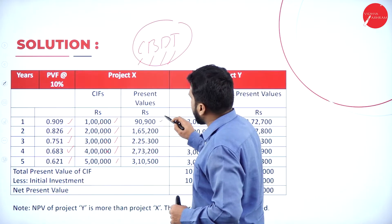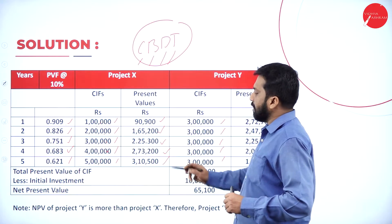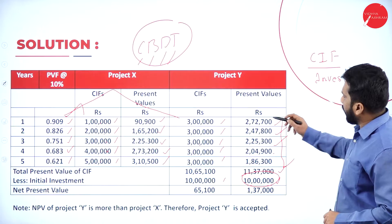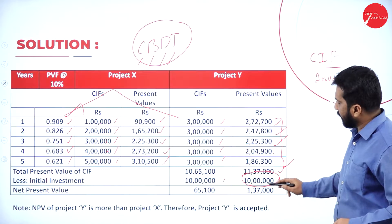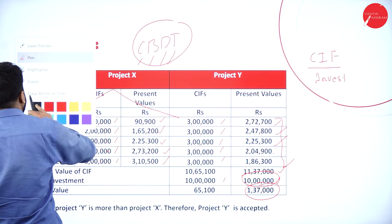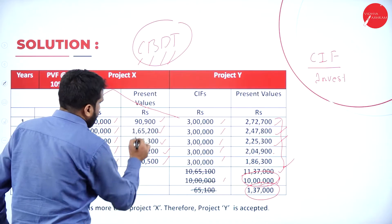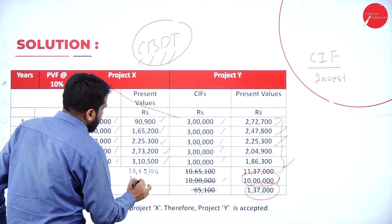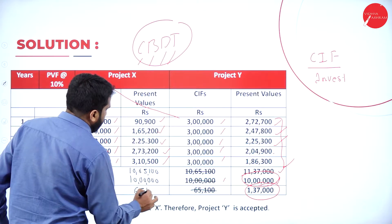Multiplying the cash inflows by PV factors for project X: 1 lakh × 0.909 = 90,900; 2 lakh × 0.826 = 1,65,200; 3 lakh × 0.751 = 2,25,300; 4 lakh × 0.683 = 2,73,200; 5 lakh × 0.621 = 3,10,500. The total present value for project X is 10,65,100, and for project Y it is 11,37,000.